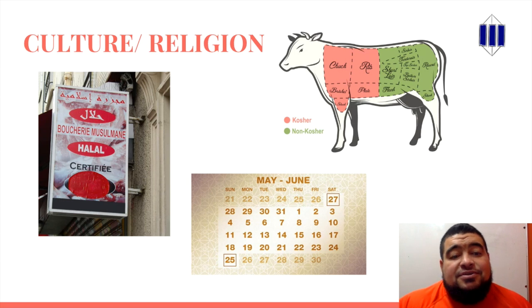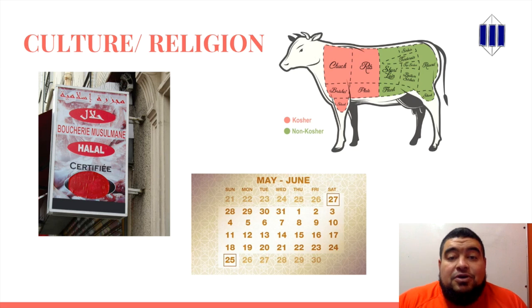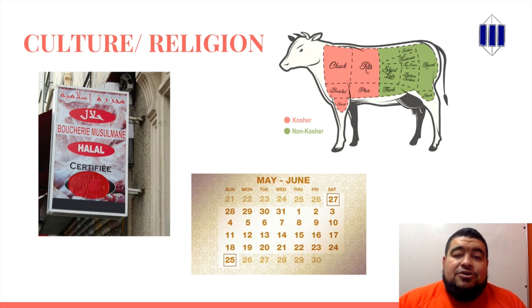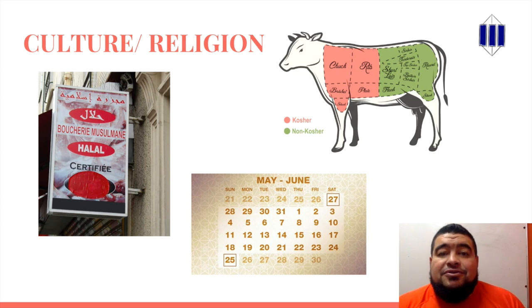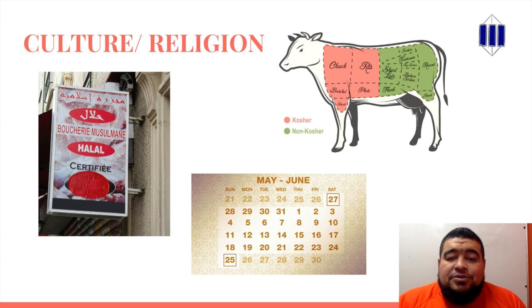Culture and religion comes into play. You have halal, which is when you can only eat certain foods which are killed in certain ways. You also have foods that are kosher and non-kosher, so certain cuts of certain types of meat can and can't be eaten by certain people. And you have things like Ramadan, which is celebrated between the months of May and June.